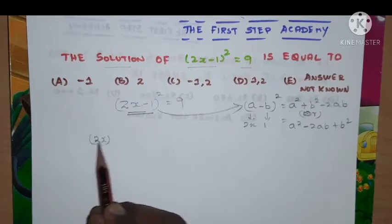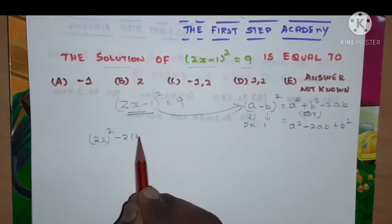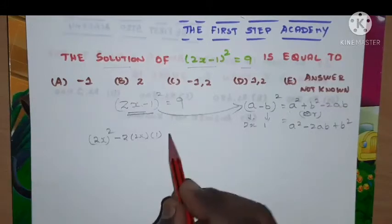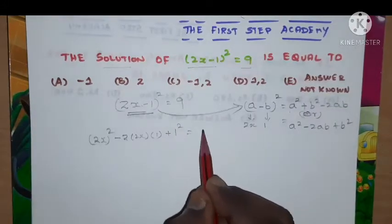(2x)² minus 2 into 2x into 1 plus 1² which is equal to 9.